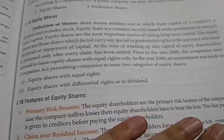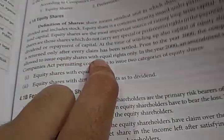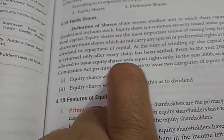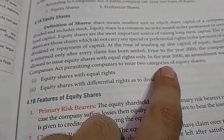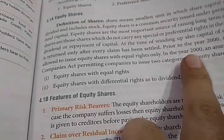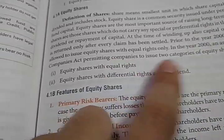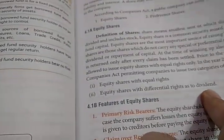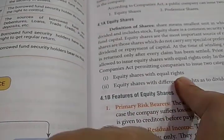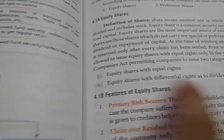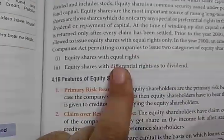Prior to the year 2000, companies were allowed to issue equity shares with equal rights only. In the year 2000, an amendment was made in the Companies Act permitting companies to issue two categories of equity shares: equity shares with equal rights, and equity shares with differential rights as to dividend. The second category gives separate rights — such as voting rights or profit-earning rights — to certain shareholders.